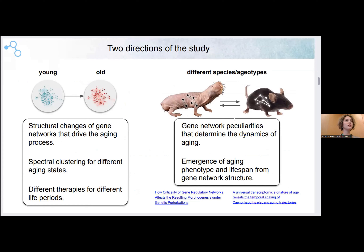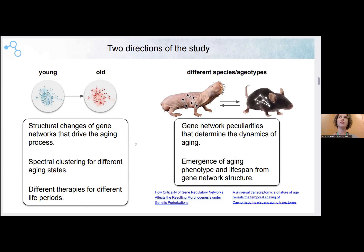Our study consists of two parts. The first one, we compare the human young state with older states, and here we are looking for structural changes of gene networks that drive the aging process. We do spectral clustering for different ages and analyze these clusters. The second area of our research is the explanation of lifespan of different organisms, especially very close species with dramatic changes in lifespans. We believe that lifespan hugely depends on the peculiarities of gene regulatory networks, and we are looking for these peculiarities.